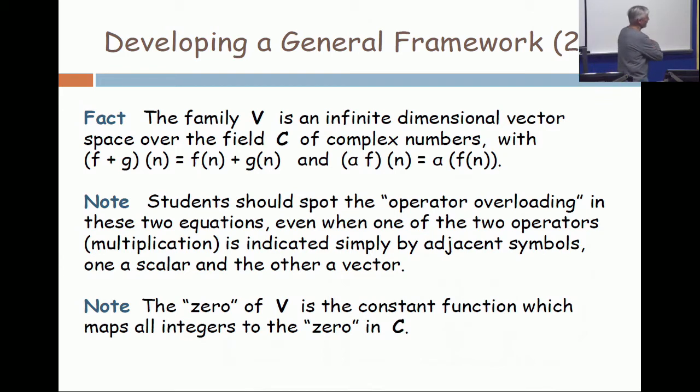On the right side, where we have the scalar multiple equation, on the first use of alpha f, we write alpha and f concatenated right next to each other, and we're now talking about the product of a complex number alpha times a function f. That product operates on n, and the answer is alpha times f of n.